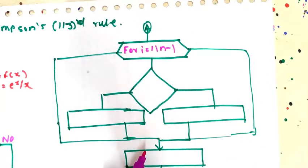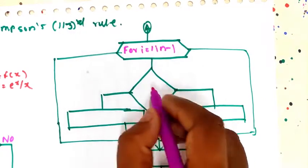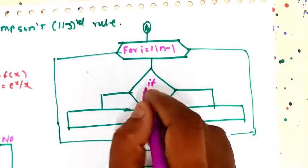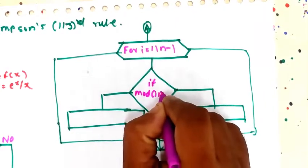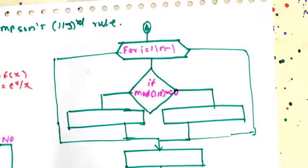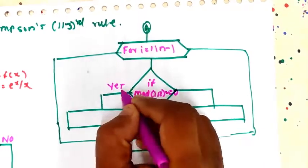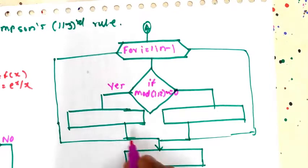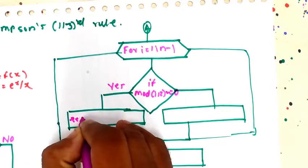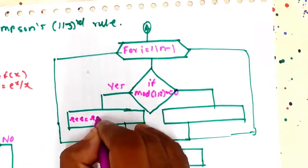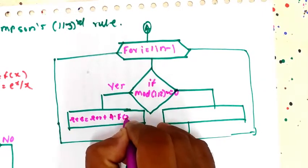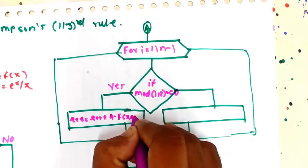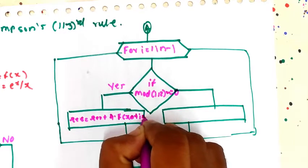Inside the loop, you check whether the term i is a multiple of 2 or not, using an if statement: if i mod 2 equal to 0. If yes — meaning i is not a multiple of 2 — then result RES becomes RES plus 4 times f of (x0 plus i times h).